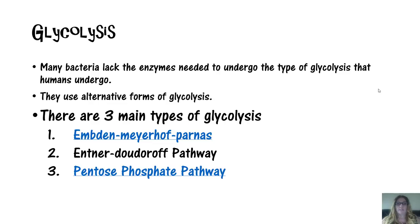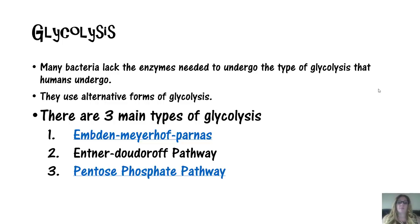Many bacteria lack the enzymes needed to undergo the type of glycolysis that humans undergo, so they use alternative forms of glycolysis. We'll talk about three main types: the EMP glycolysis pathway, the ED pathway, and the PP pathway.